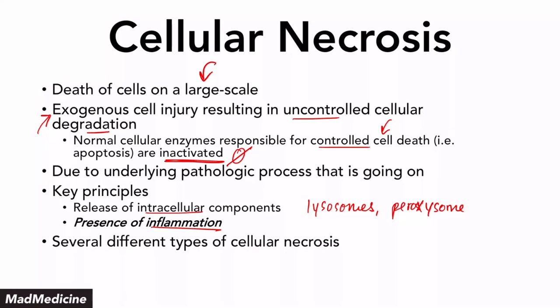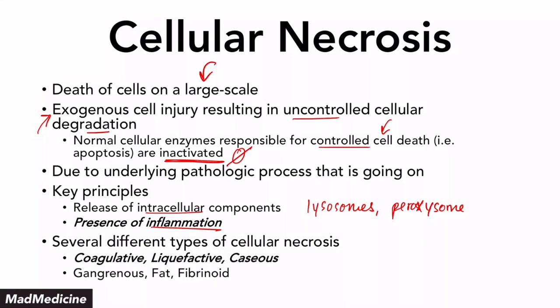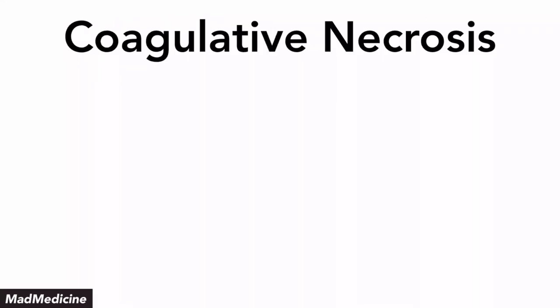There are several different types of necrosis you need to be aware of for your exams. The ones we're going to talk about in this part one are coagulative, liquefactive, and caseous necrosis, because these all kind of relate to each other. The rest are going to be discussed in part two, which covers gangrenous, fibrinoid, and fat necrosis.